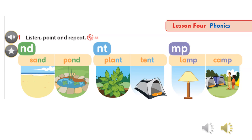Listening 83 — Listen and point. ND: sand, pond. NT: plant, tent. MP: lamp, camp.